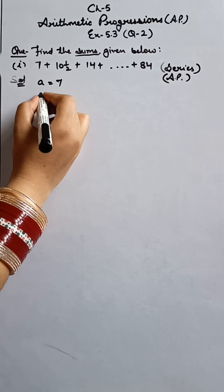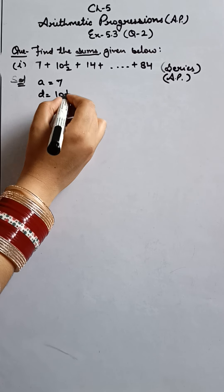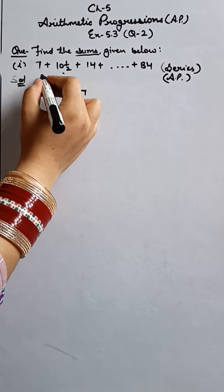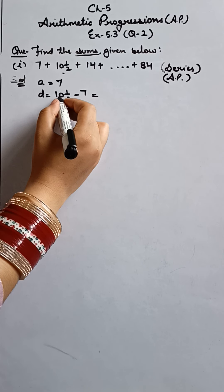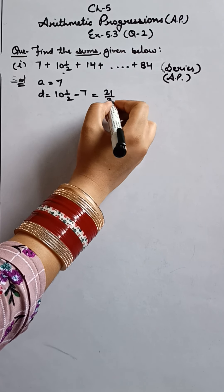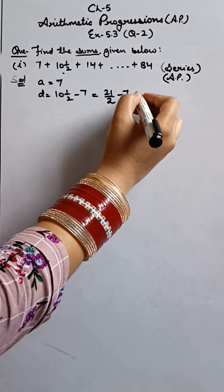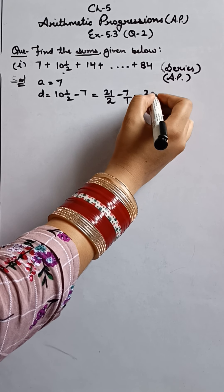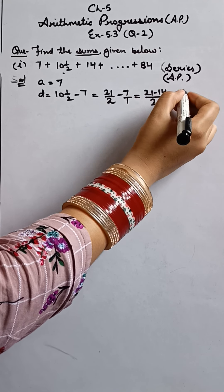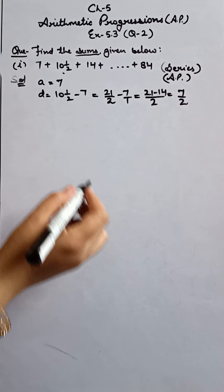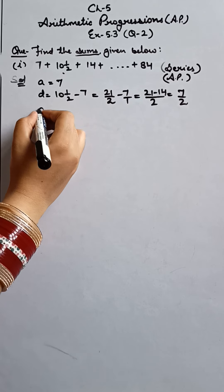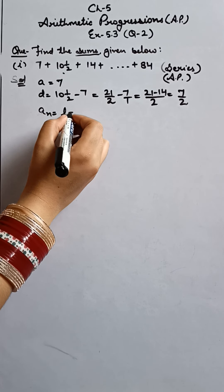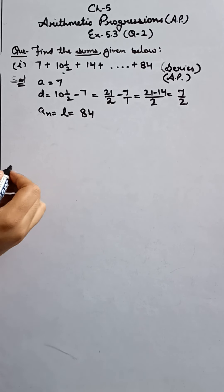So according to the question, what is given to us? Our A is 7. D is second term minus first term. We will solve this subtraction. Two tens are twenty plus one, twenty one upon two minus seven. By taking LCM, we will get seven by two. So our D is seven by two. And in this AP, what else is given? Last term, which is 84.